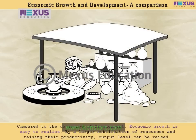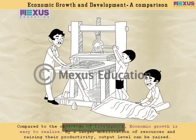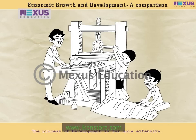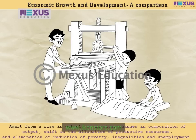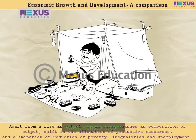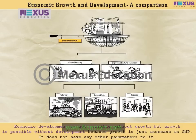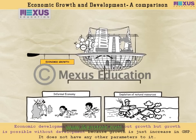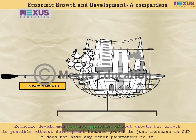Hence, compared to the objective of development, economic growth is easy to realize. By a large mobilization of resources and raising their productivity, output level can be raised. The process of development is far more extensive. Apart from a rise in output, it involves changes in composition of output, shift in the allocation of productive resources, and elimination or reduction of poverty, inequalities, and unemployment. Economic development is not possible without growth, but growth is possible without development, because growth is just an increase in GNP.